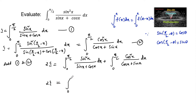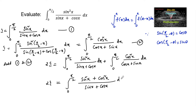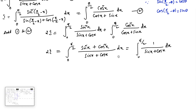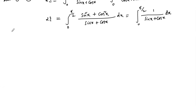So we can write 2I = ∫₀^(π/2) (sin²x + cos²x)/(sinx + cosx) dx, which equals ∫₀^(π/2) 1/(sinx + cosx) dx. Therefore I = (1/2) ∫₀^(π/2) 1/(sinx + cosx) dx.